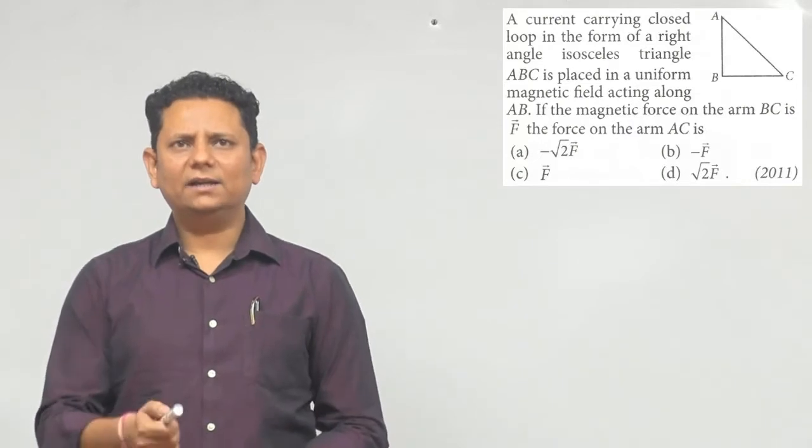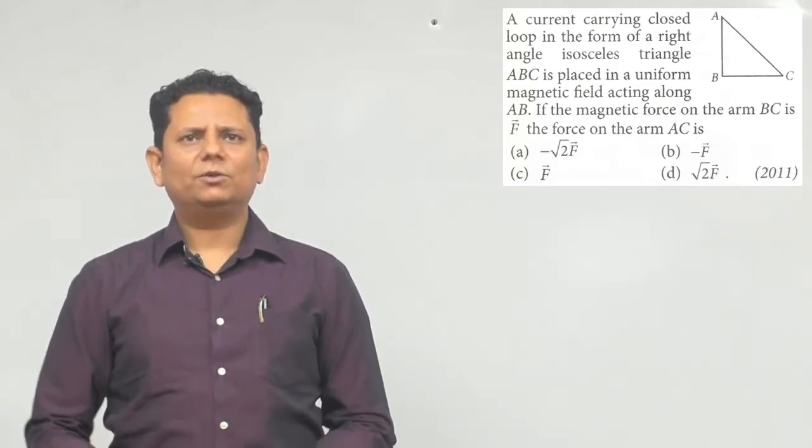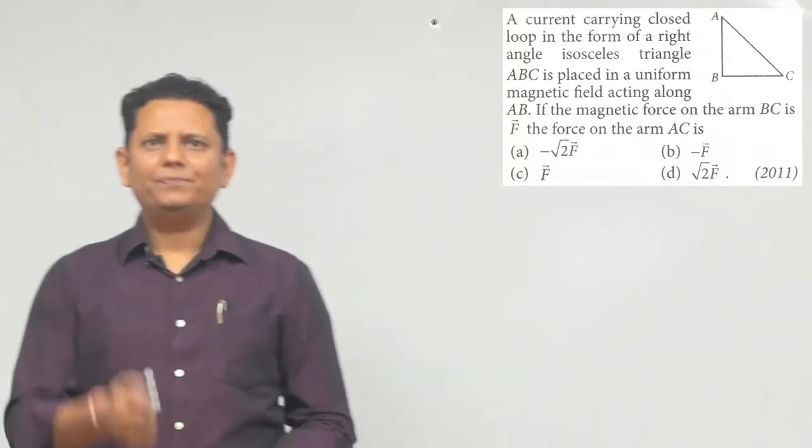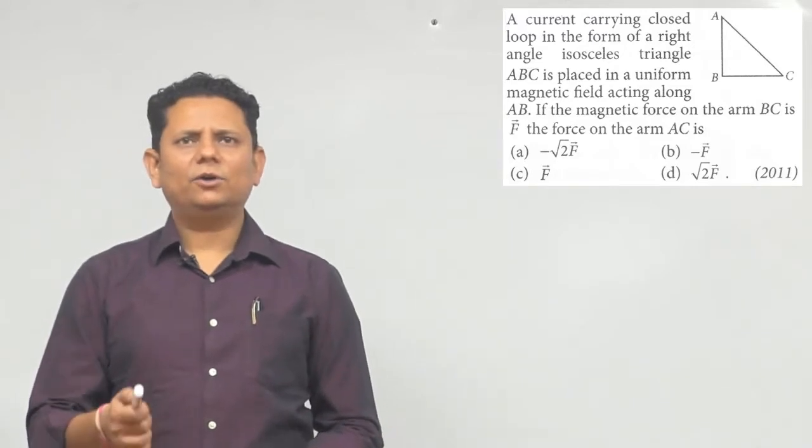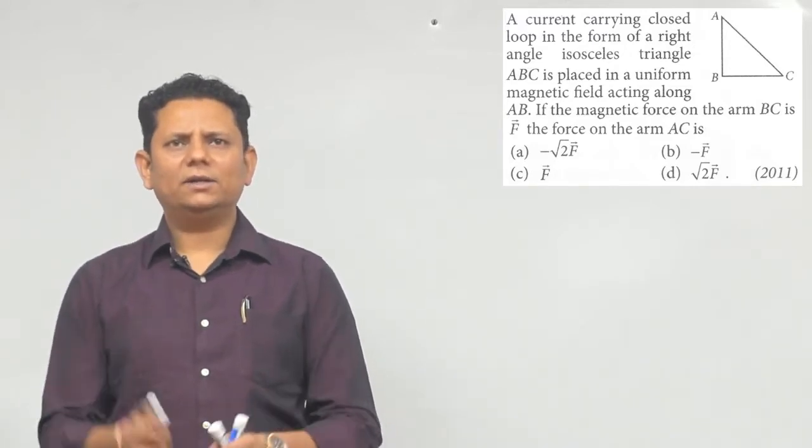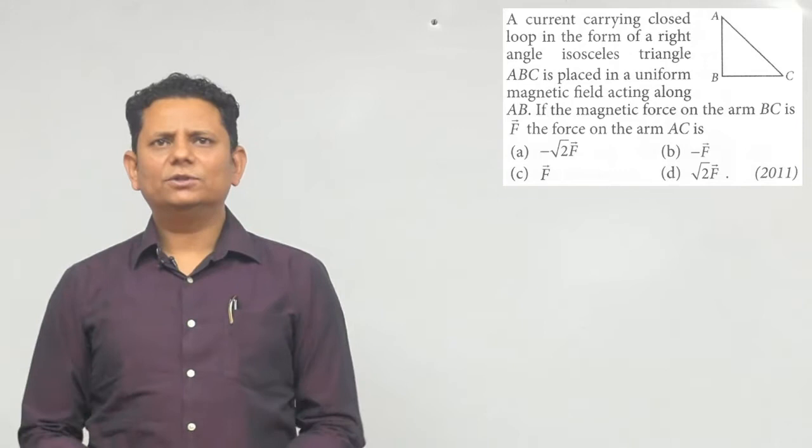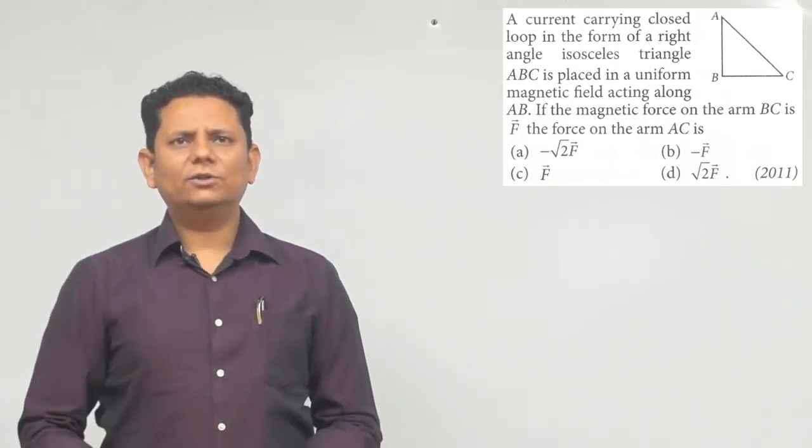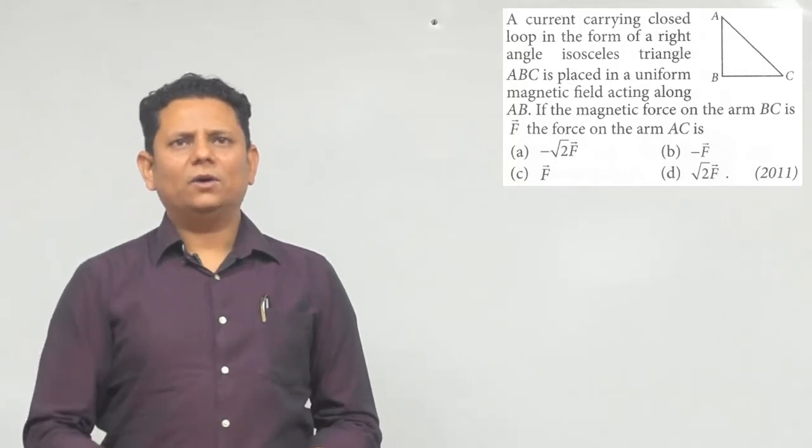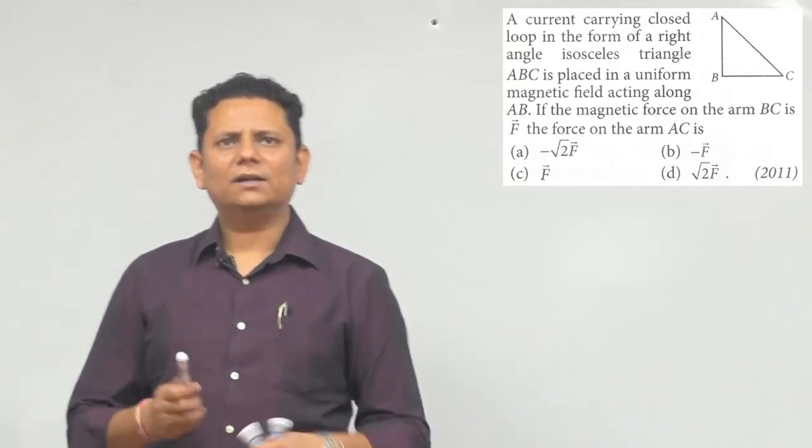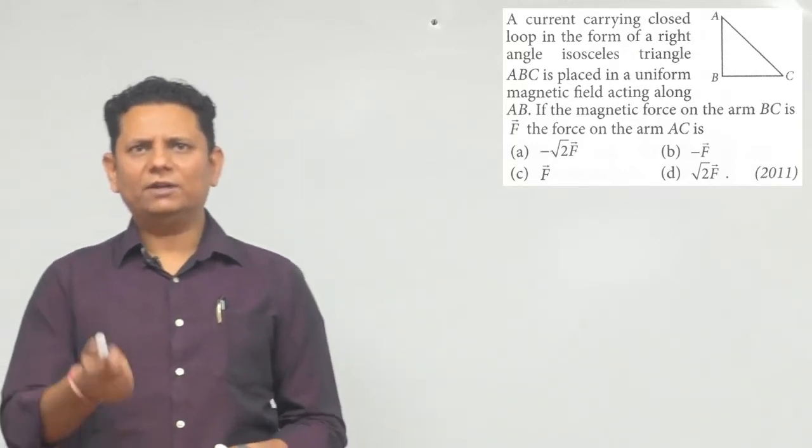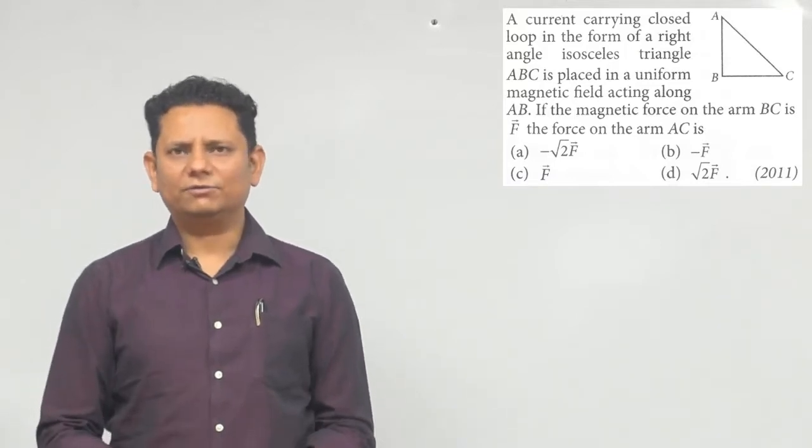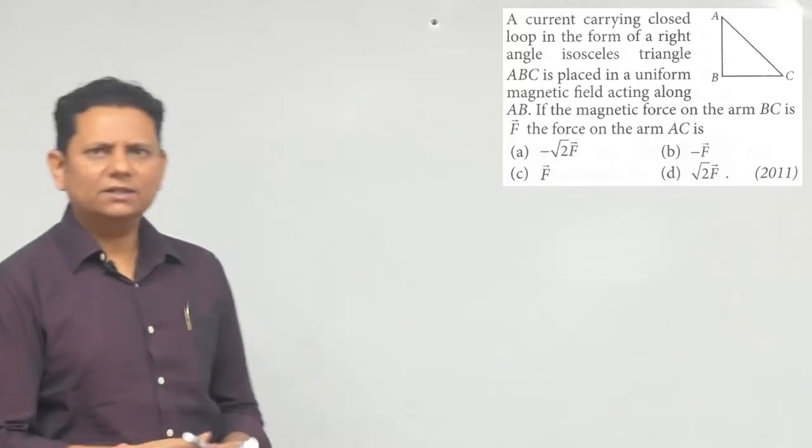The next question says a current carrying closed loop in the form of a right angle isosceles triangle ABC is placed in a uniform magnetic field acting along AB. If the magnetic force on the arm BC is F, the force on the arm AC will be: the options are minus √2F, minus F, F, or √2F.